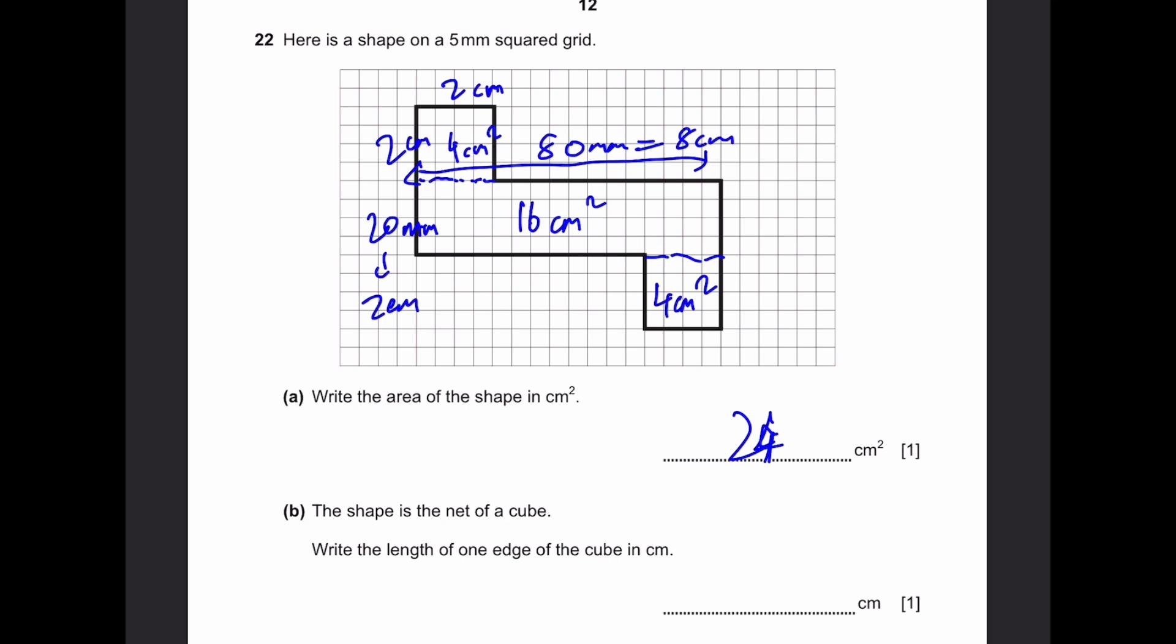B, the shape is the net of a cube. Write the length of one edge of the cube in centimeters. So this shape is the net of a cube. That means that these two squares are two opposite facing sides. And this is the length of a cube. So that will be 2 centimeters. That's the answer.